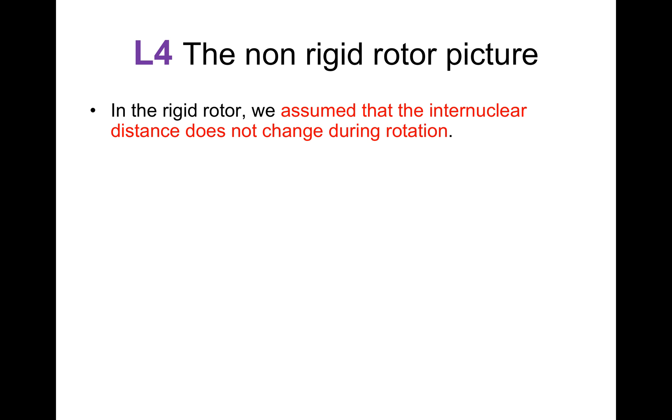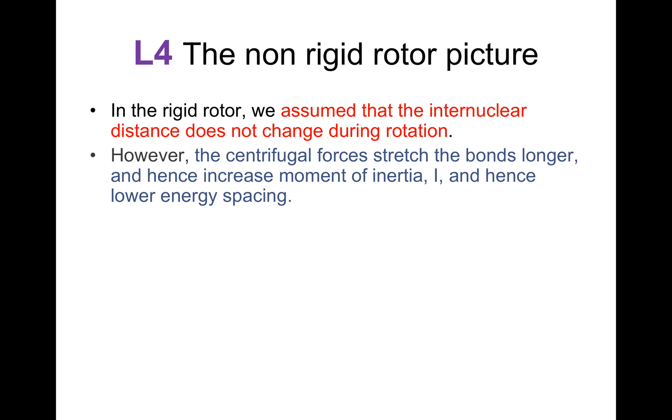In the rigid rotor, we assumed that the internuclear distance does not change during rotation. However, the centrifugal forces stretch the bonds longer and hence increase the moment of inertia, and hence lower the energy spacing.